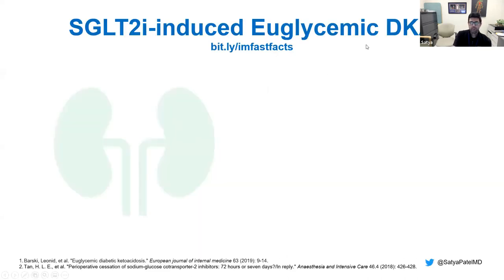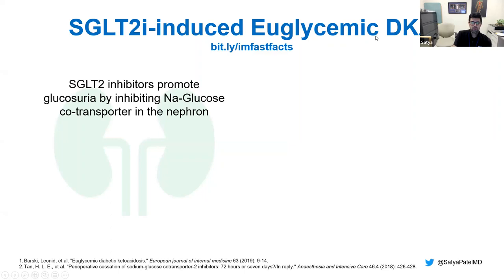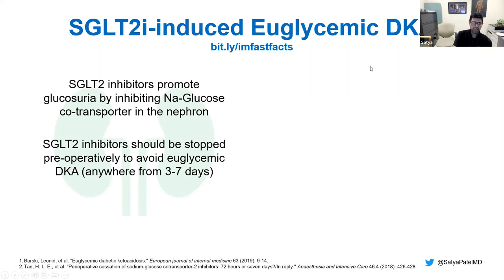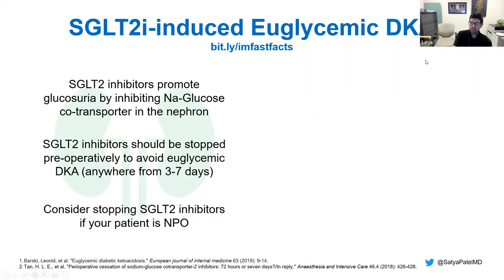To review: SGLT2 inhibitors promote glucosuria by inhibiting the sodium-glucose co-transporter in the nephron. They should be stopped preoperatively — anywhere from three to seven days — to avoid euglycemic DKA. You should also consider stopping them if your patient is NPO.